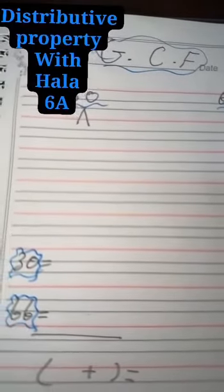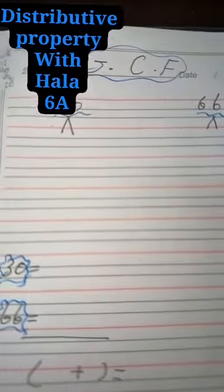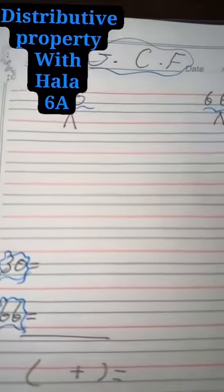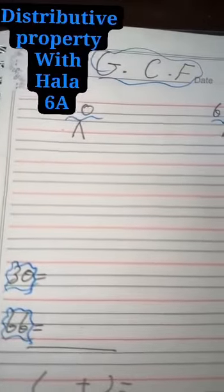First step, to factorize the number. Why do you factorize it? To get its prime numbers. What are the prime numbers? Prime numbers are numbers that have one and itself only.